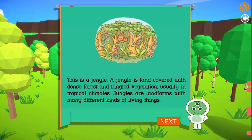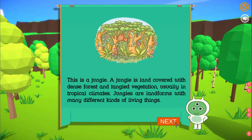This is a jungle. A jungle is land covered with dense forest and tangled vegetation, usually in tropical climates. Jungles are landforms with many different kinds of living things.